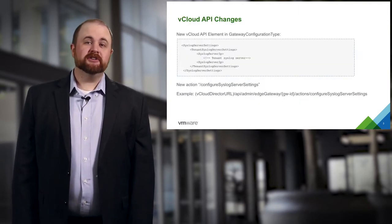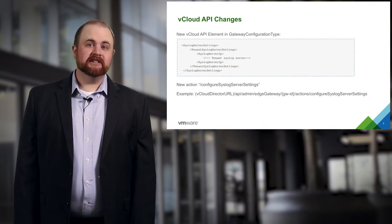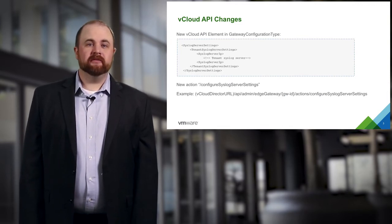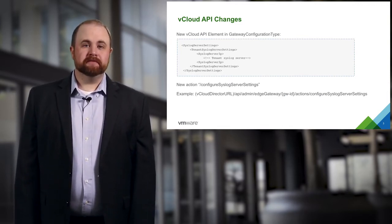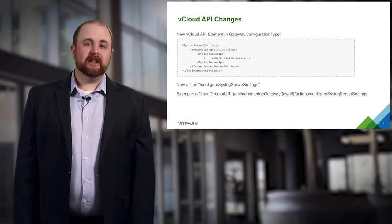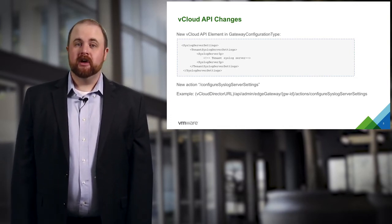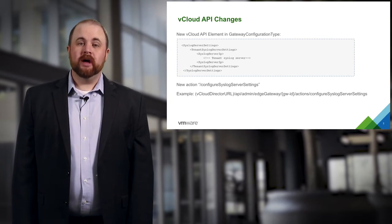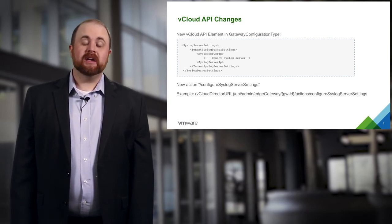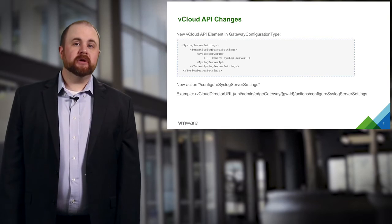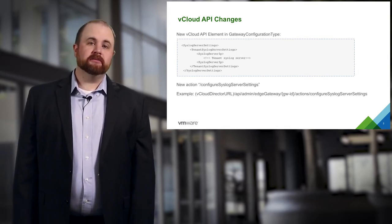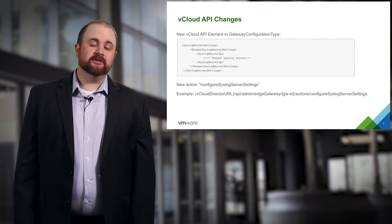Access to the Edge gateway log data today is accomplished through the vCloud API. VMware is currently developing more elements. The vCloud API is a way to programmatically interact with the vCloud Air service. One of these new elements is in the gateway configuration type, within which VMware is supporting a new action on the customer's Edge gateway: configure syslog server settings.